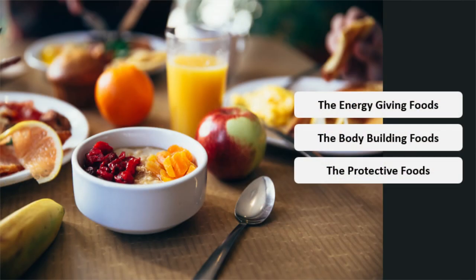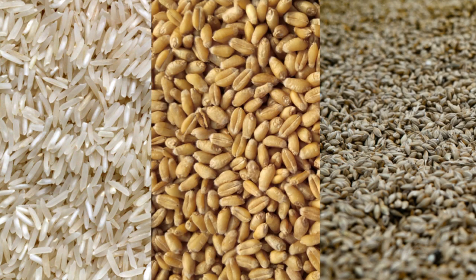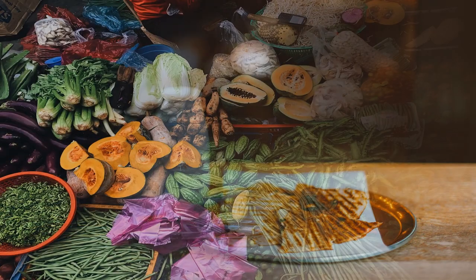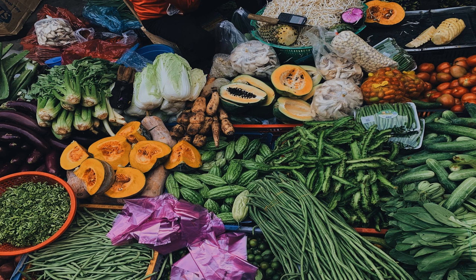Before I begin today's lecture, I'd like to take you back to the last unit on food groups. The 3 basic food groups were energy-giving foods, body-building foods and protective foods. Energy-giving foods mainly comprised of cereals and fats. Body-building foods consisted of protein sources like pulses, milk and milk products, meat, fish and poultry. Protective foods gave us vitamins and minerals, mainly from fruits and vegetables.